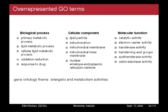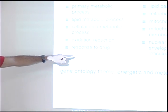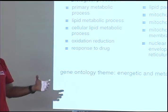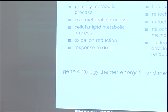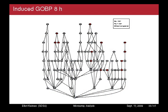The overrepresented GO terms — energetic and metabolism pathway activities is the theme of the experiment. You can see in the biological process: metabolism, lipid particles, a lot of mitochondrial stuff — mitochondrial is all energy stuff, electron transfer. This is a visualization of the hierarchical structure of the GO — it's a directed acyclic graph where the red-highlighted ones are the GO terms associated with the set of interesting genes at, say, 8 hours, overlaid in red.